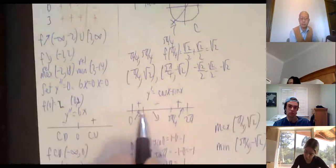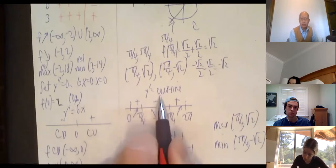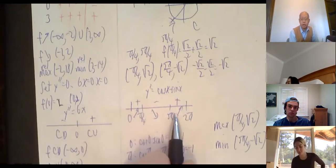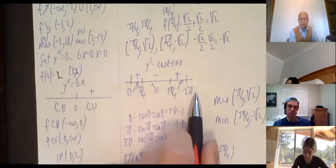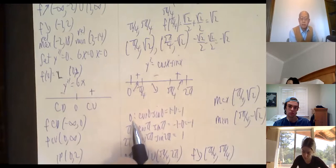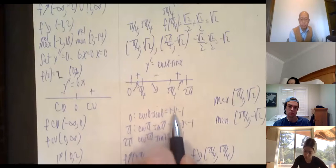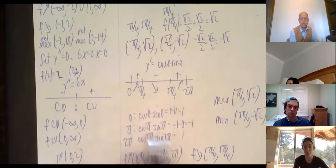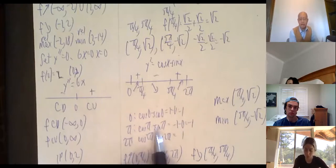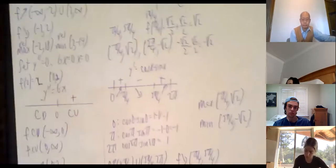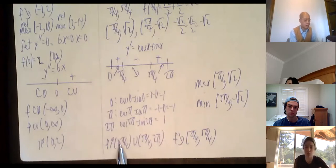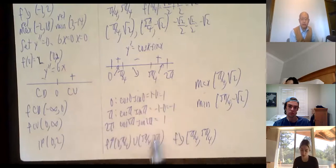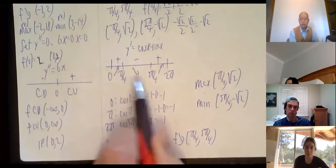Sign chart for y′ = cos x - sin x on [0, 2π], with critical numbers at π/4 and 5π/4. Plug in x = 0: cos(0) - sin(0) = 1 — positive. Plug in x = π: cos(π) - sin(π) = -1 - 0 = -1 — negative. And x = 2π matches x = 0, so positive. Pattern: positive, negative, positive — so increasing on (0, π/4), decreasing on (π/4, 5π/4), increasing on (5π/4, 2π).